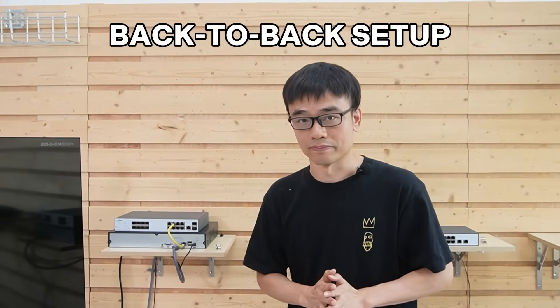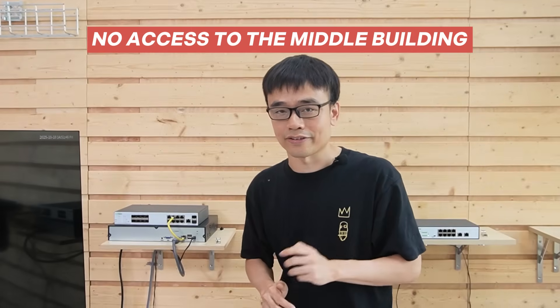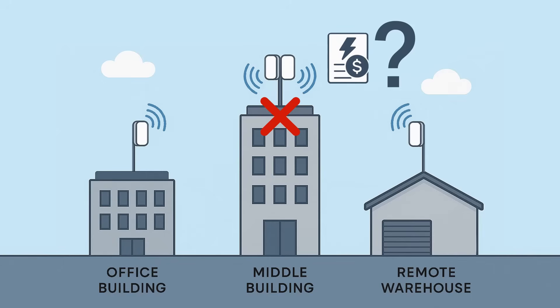Then he tries to look for a back-to-back solution. He wants to put another pair of wireless bridges on top of the building to relay between the two wireless bridges on both sides. But he doesn't have access to that building — the owner doesn't want them to install any wireless bridges on the roof, not to mention how to power those two wireless bridges.